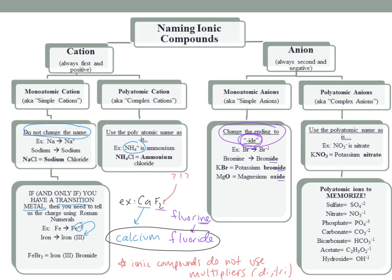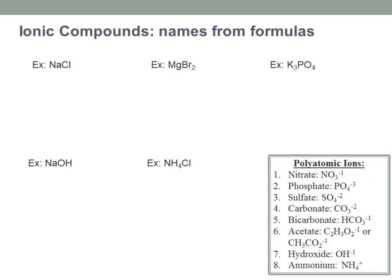Let's do some more examples. NaCl — sodium on the periodic table, and chlorine becomes chloride — so it's your good old table salt, sodium chloride. Notice I changed the ending of the anion to -ide; cations stay the same, anions change to -ide. MgBr₂: Mg is magnesium, and bromine becomes bromide — so magnesium bromide. Again, I have two bromines but I don't say dibromide; no multipliers.